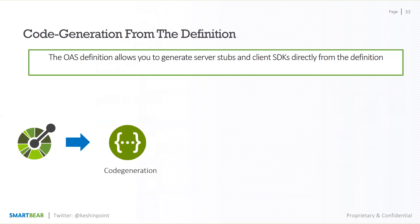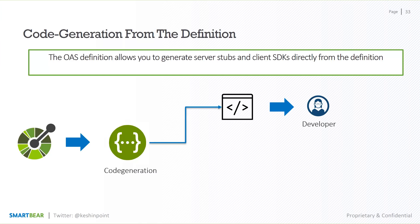Let's take, for example, you have your OpenAPI specification. Using a code generating tool like Swagger CodeGen, you can actually generate server stubs in over 30 different languages, which your developer — your internal stakeholder who builds out the API — can then use that server stub. And instead of worrying about any of the boilerplate code, they can focus only on the business logic.